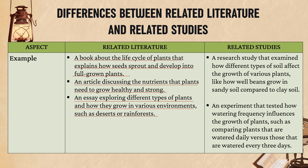In a related studies example, if you are investigating how plants grow, you might look at a research study that examined how different types of soil affect the growth of various plants, like how well beans grow in sandy soil compared to clay soil, and an experiment that tested how watering frequency influences plant growth, comparing plants watered daily versus those watered every three days. Both of these related studies focus directly on how plants grow, allowing you to understand what has already been discovered.